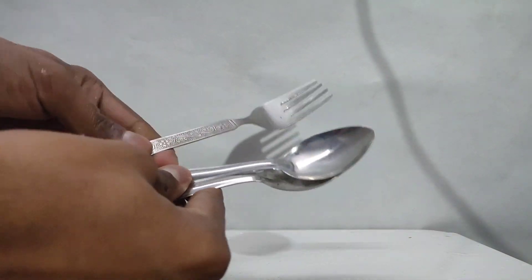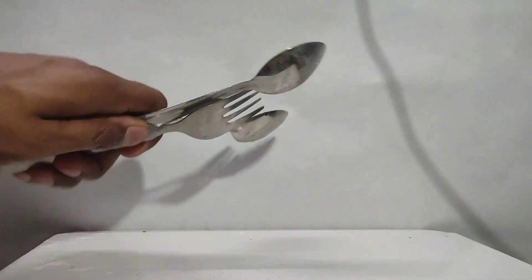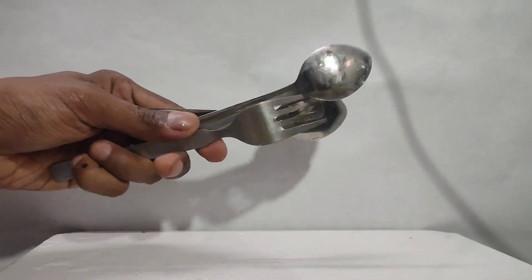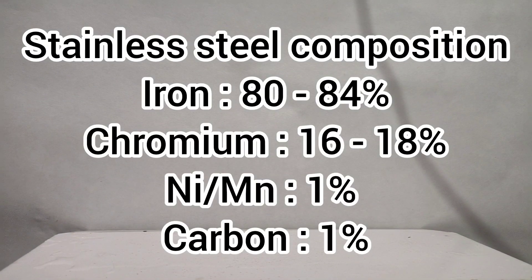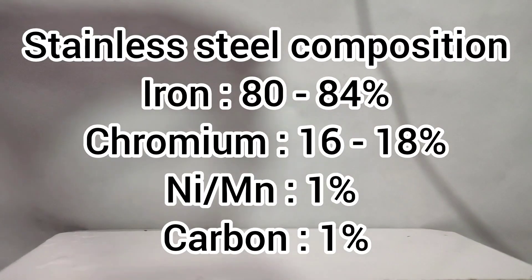In this video, I will be making potassium dichromate from old cutlery which is made up of stainless steel. Stainless steel contains around 16-18% chromium. Taking this into consideration, I have made all the measurements.